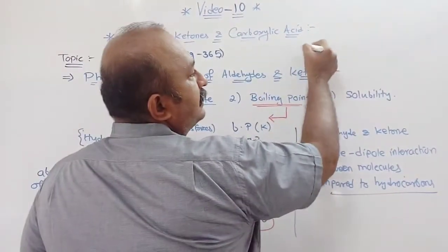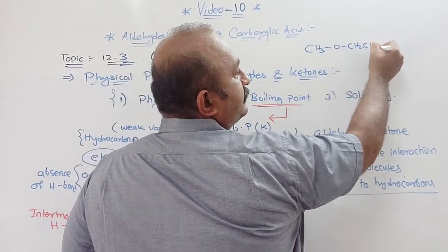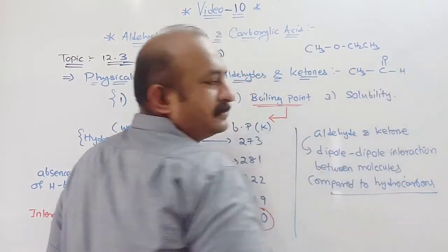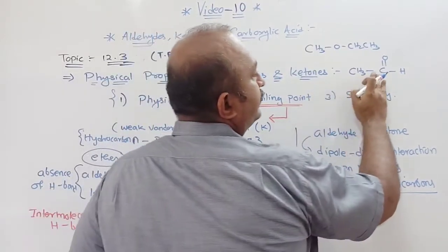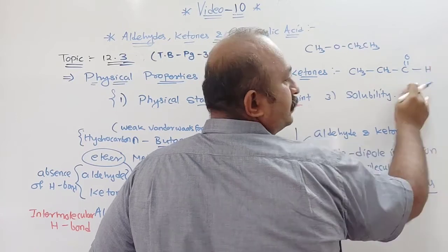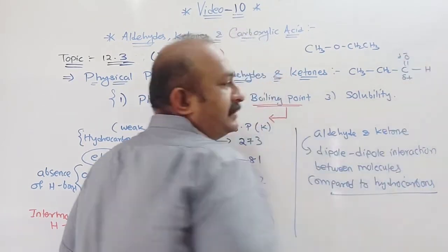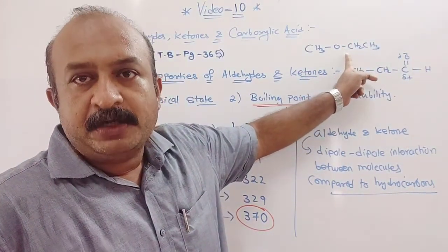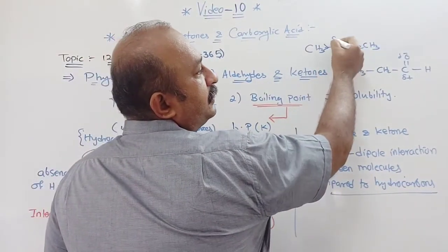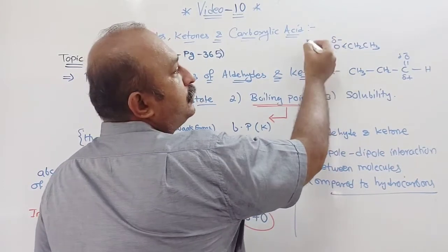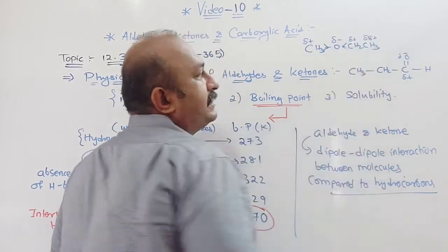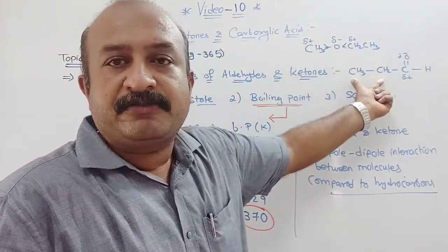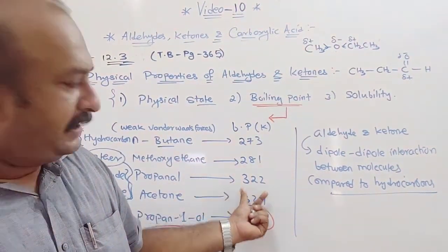The formula for methoxyethane is CH3-O-CH2CH3. For aldehyde, taking three carbons: CH3CH2-C=O with H. Here delta plus and delta minus show the dipole-dipole interaction. The dipole-dipole interaction in ether is less compared to that of aldehyde. That is why ether has a lower boiling point compared to aldehyde and ketone.